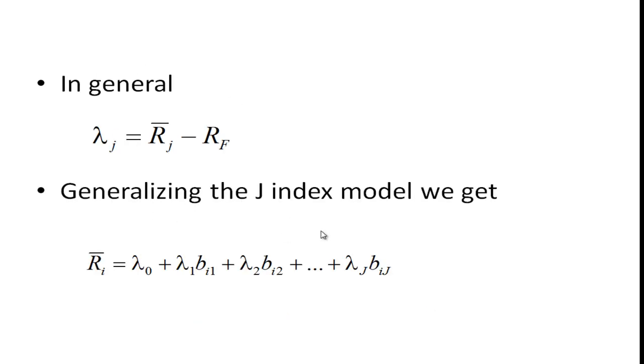But this is essentially what APT looks like. And again, the nice thing about APT is that it allows us to use more indexes—you may have some industry indexes, you may have an inflation index, etc.—but it also uses less restrictive assumptions. The most important assumption is this law of one price, the concept of arbitrage.